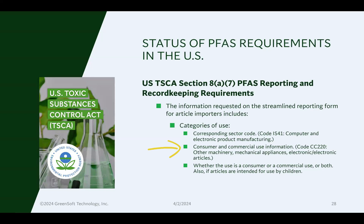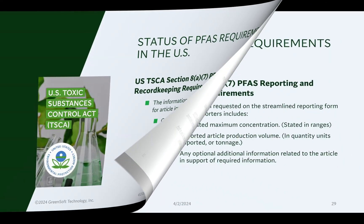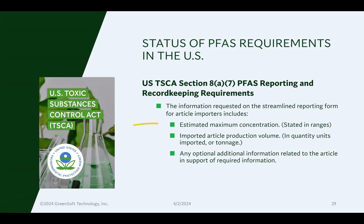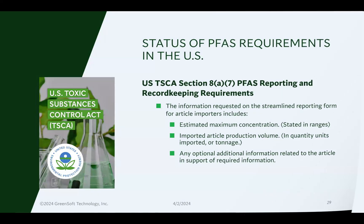You also need to disclose whether the product is used for consumer or commercial use or both, and if it's used by children. When providing this information, you need to disclose the estimated maximum concentration of the PFAS in the article, as well as the imported volume. For article importers, the imported volume refers to the quantity of articles in units or tonnage of units imported — not necessarily the quantity of the PFAS itself.